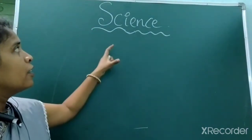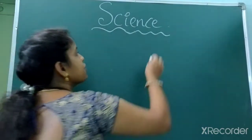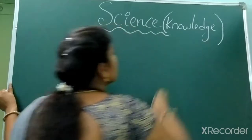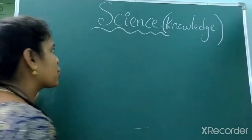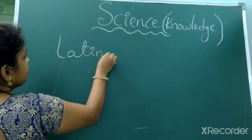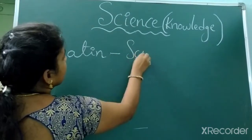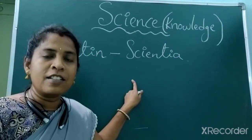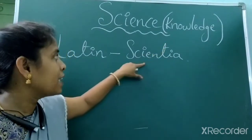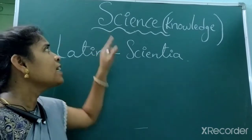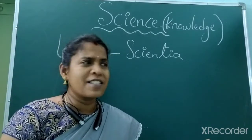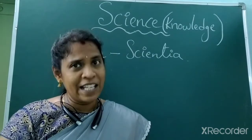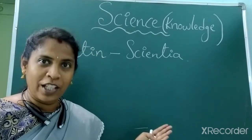So, what is the meaning of science? The meaning of science is knowledge. In the Latin language, 'scientia' means knowledge. From this term, the word science has been derived. Science is a branch which deals with the study of nature. We will look at everything about what is science now.